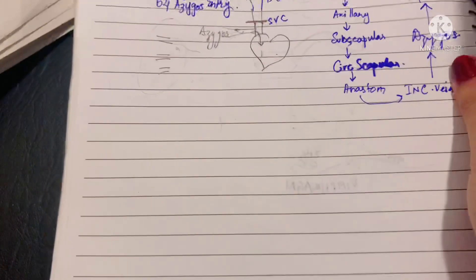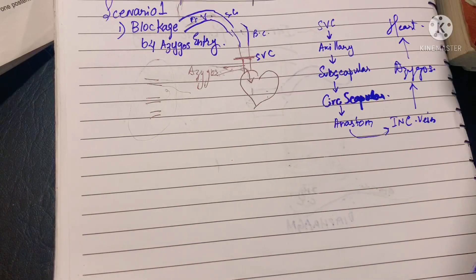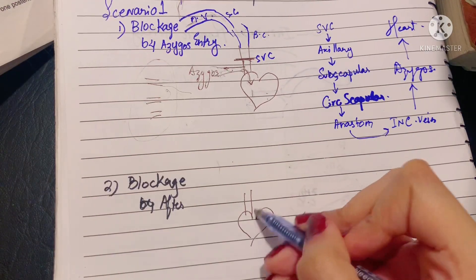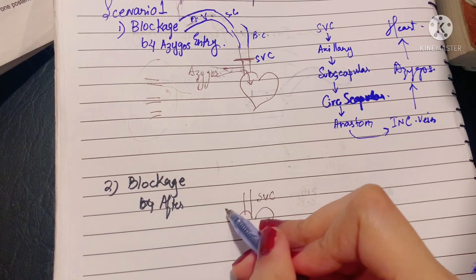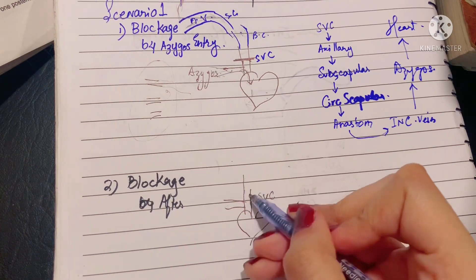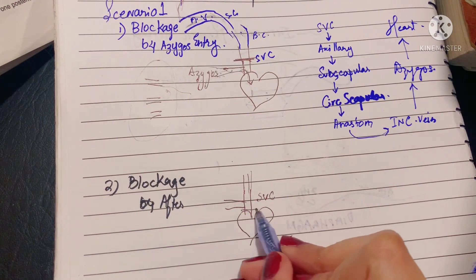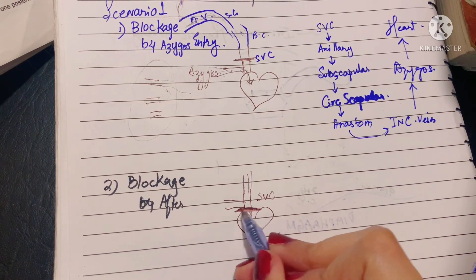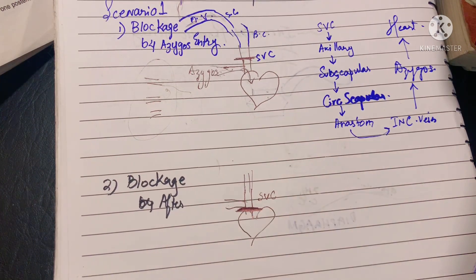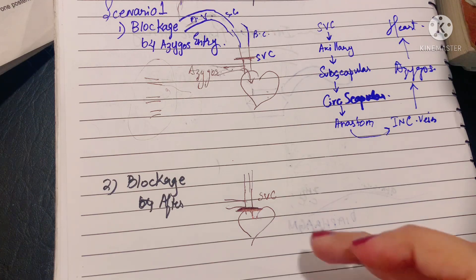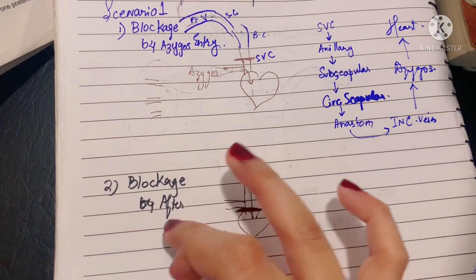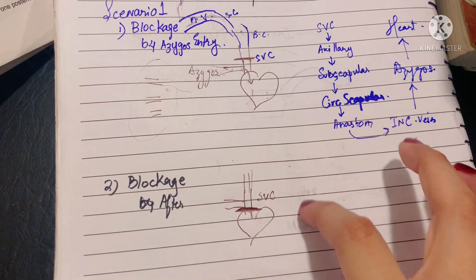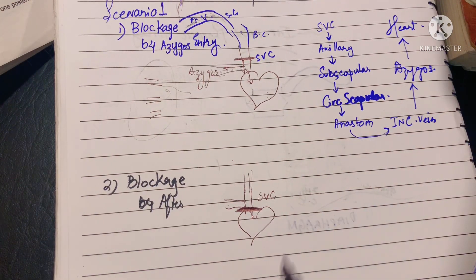In Scenario 2, the blockage occurs after the entry of the azygous vein into the superior vena cava. In this case, the azygous vein cannot help, as there is no way it can bring blood back to the heart past this blockage. An entirely different collateral route must open up.